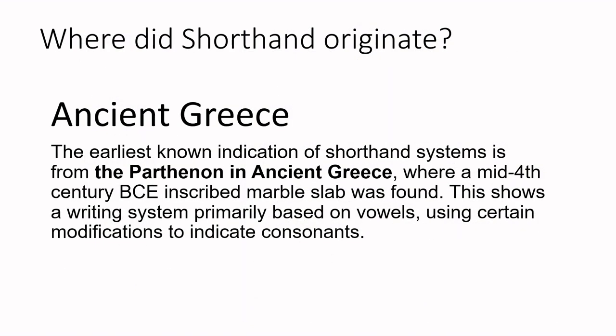But where did shorthand originate? The earliest known indication of shorthand systems is from the Parthenon in ancient Greece, where a mid-4th century BCE inscribed marble slab was found. This shows a writing system primarily based on vowels, using certain modifications to indicate consonants.